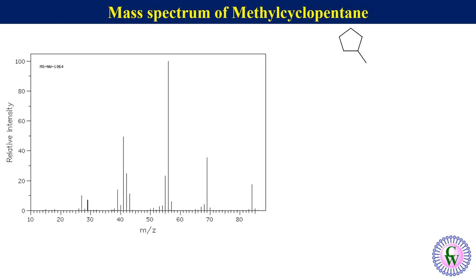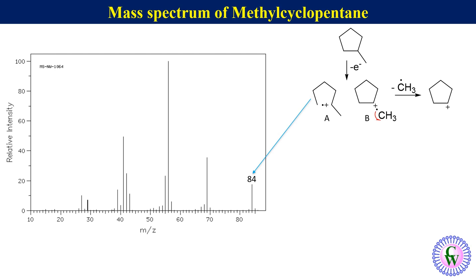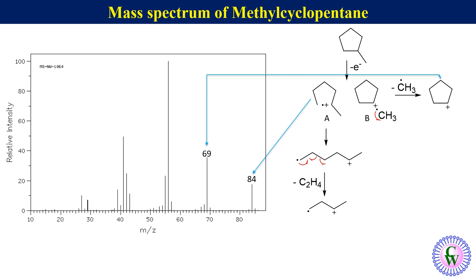Now let's look at the mass spectrum of methyl cyclopentane. Upon electron bombardment, it loses one electron to produce molecular ion peaks a and b, both with m/z of 84. Peak b expels a methyl radical to produce a cyclopentyl cation with m/z of 69, corresponding to the m minus 15 peak. Peak a, after ring opening, gives an open-chain radical cation which loses an ethylene molecule to give m/z of 56 (m minus 28). Further removal of a methyl radical gives a cyclopropyl cation with m/z of 41.